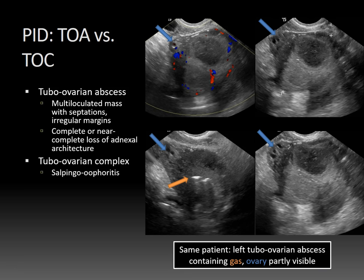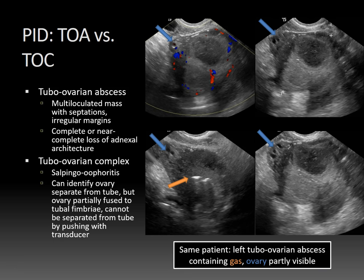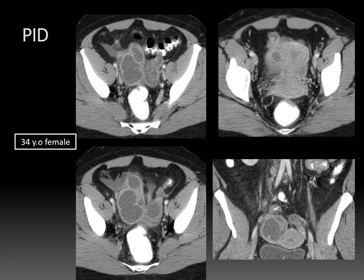Differentiate that from a tubovarian complex, which is seen in the setting of salpingo-oophoritis without abscess. You'll be able to identify ovaries separate from the tube, but the ovary will be partially fused to the tubal fimbriae — meaning you cannot separate the ovary from the tube by pushing with the transducer, which is an important dynamic ultrasound finding.